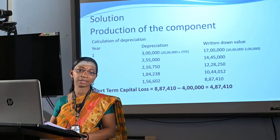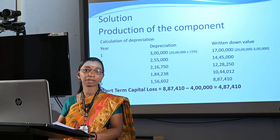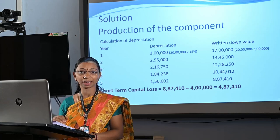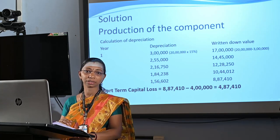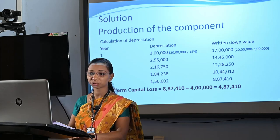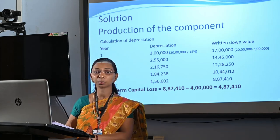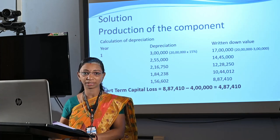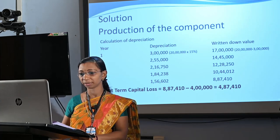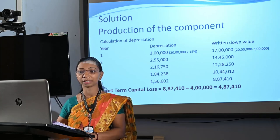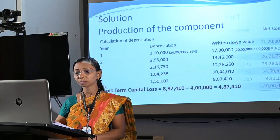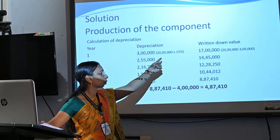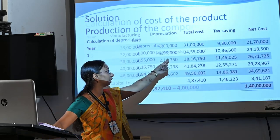Here also we want to decide whether to make the product by the company itself or to purchase it from outside market by comparing manufacturing cost with purchase cost. First of all, we have to calculate the production cost. For identifying the production cost, we have to calculate depreciation and written-down value of the asset. Depreciation percentage is 15%, therefore the first year's depreciation is Rs. 3,00,000, that is Rs. 20,00,000 into 15%.